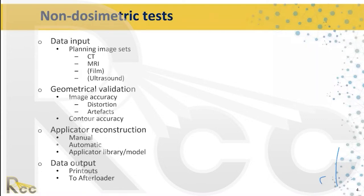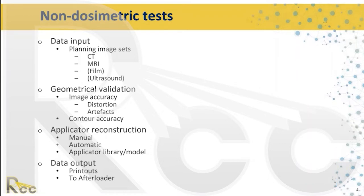For non-dosimetric tests, you have basic data input and output validation. The data input for a typical brachytherapy dose calculation can be either 2D or 3D — it could be film, 2D ultrasound, or 3D CT or MR, and sometimes a fusion between CT and MR. Geometrical validation also has to test image accuracy, especially since brachytherapy applicators can distort both the anatomy and the imaging, as they are not made of natural soft tissue materials.